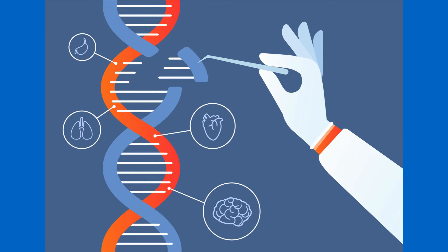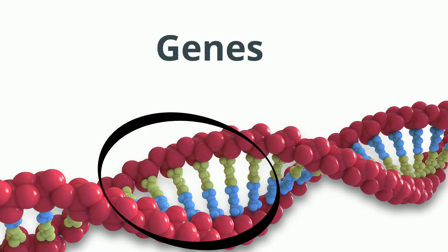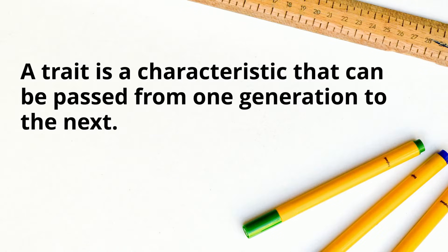Genes are a portion of DNA that contain the code for a particular characteristic called a trait. For example, this portion of the DNA may code for height in a pea plant, or this portion may code for the color of the flower of a pea plant. A trait is a characteristic that can be passed from one generation to the next, like the color of these apples.